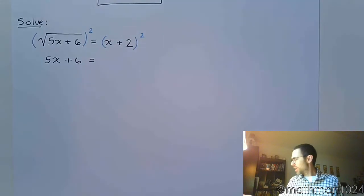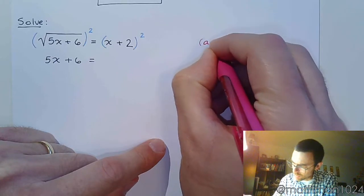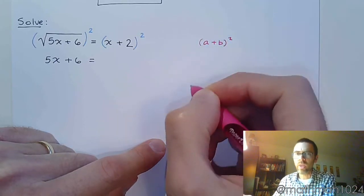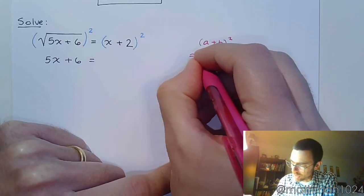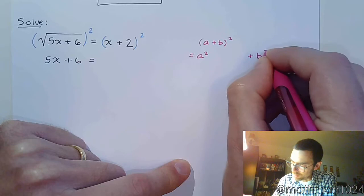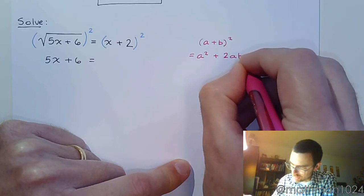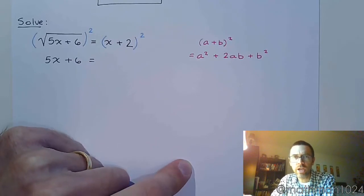Over here, we need to make sure that we remember this special product. We mentioned it when we were talking about completing the square. But when you square a binomial, you don't get just a squared and b squared. You also have a middle term, which is 2 times a times b.